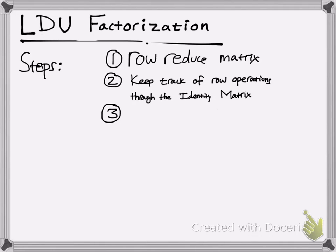Then you're going to keep track of your row operations through the identity matrix, similar to LU decomposition. And you're going to perform the elementary matrices on the identity matrix. Then you're going to factor out the main diagonal to get your diagonal element.